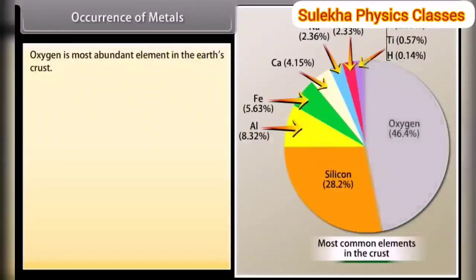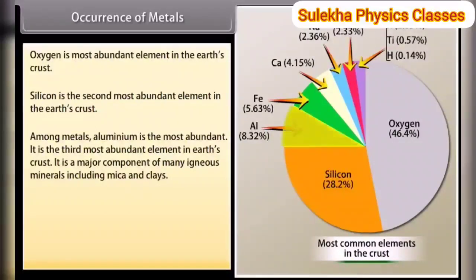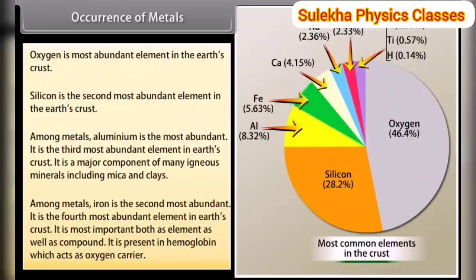Occurrence of metals. Oxygen is the most abundant element in the earth's crust. Silicon is the second most abundant element. Among metals, aluminium is the most abundant — it is the third most abundant element overall and a major component of many igneous minerals including mica and clay. Many gemstones are impure forms of Al₂O₃, with impurities ranging from chromium to copper. Iron is the second most abundant metal and the fourth most abundant element in the earth's crust. It is present in hemoglobin, which acts as an oxygen carrier.